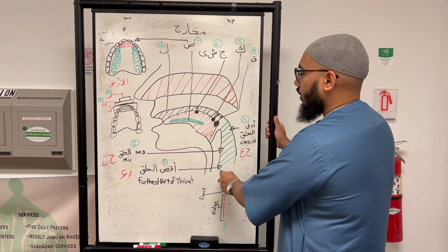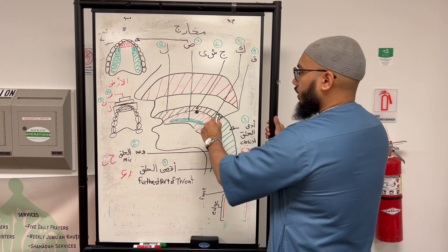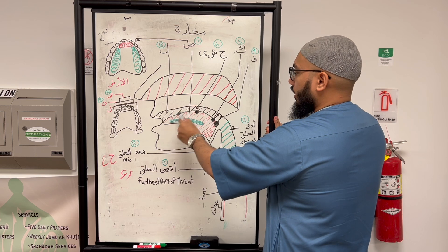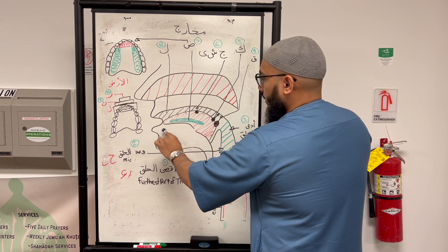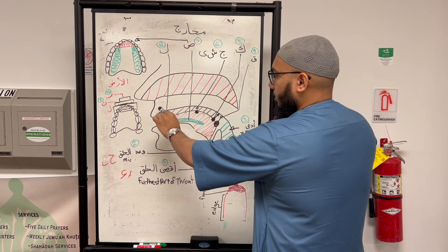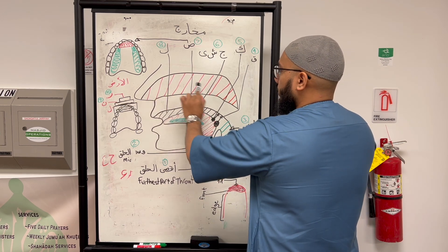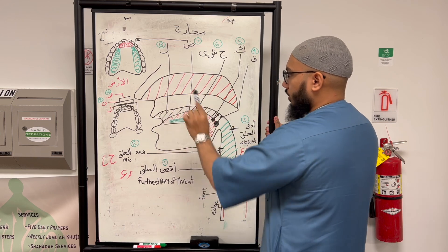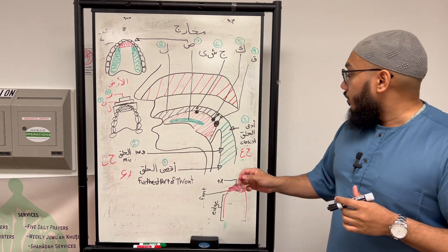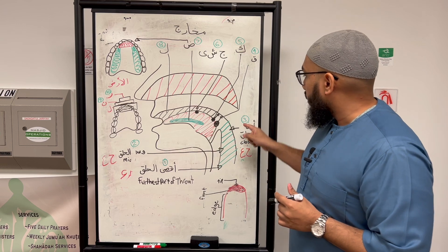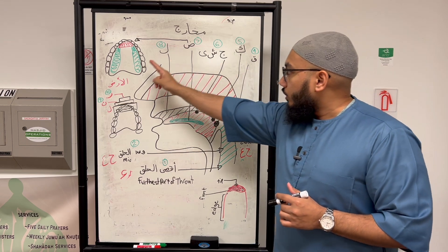The scholars start from the farthest part in the throat, then cover all the letters of the throat. Thereafter, they cover all the letters of the mouth — meaning the letters that require the tongue and the teeth. You slowly come to the lips area, and there are certain letters of the lips. They finish with the nasal cavity. The circled numbers on the board are the different Makharij, and we've reached number 10.